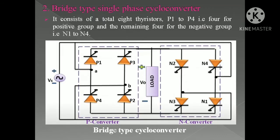The bridge-type cycloconverter configuration looks similar to this schematic. To understand how it becomes step-up: whenever we switch the devices more frequently than the supply voltage, it becomes a step-up cycloconverter. When your AC supply has a frequency fs and you keep switching the thyristor devices at a rate greater than the supply frequency, the frequency across the load voltage becomes higher. In the bridge-type configuration we have a P-converter and an N-converter.